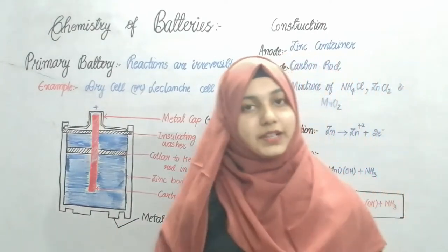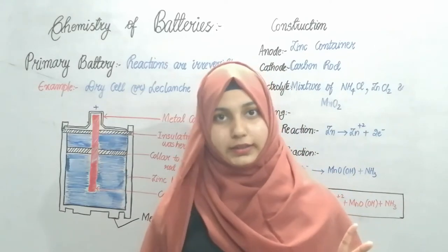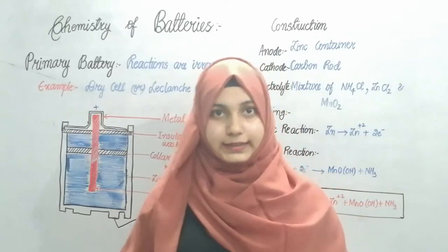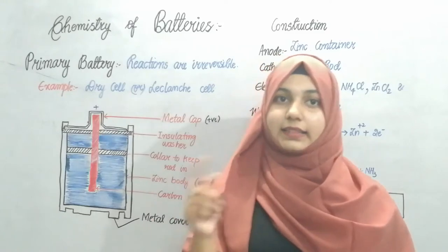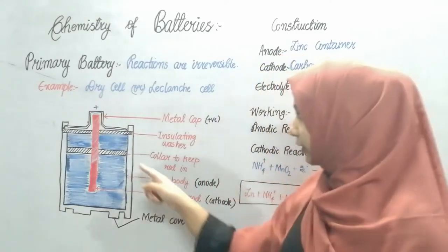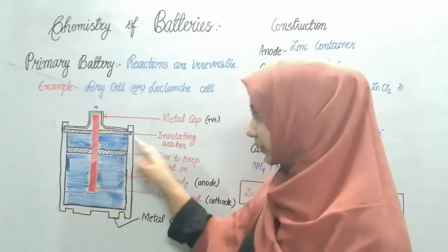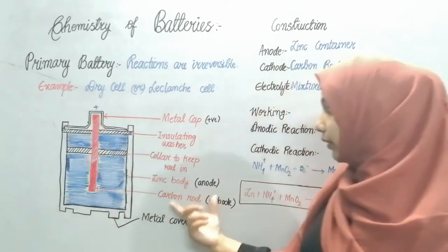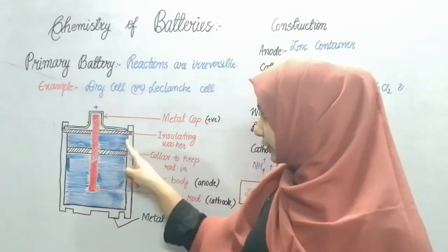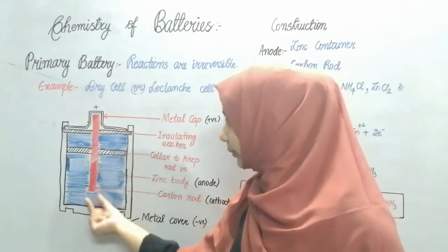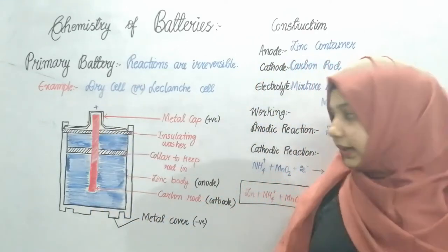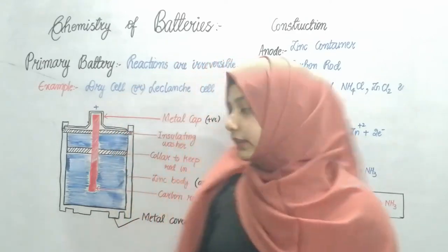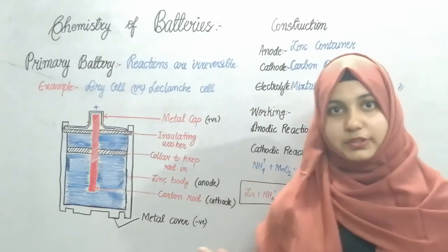For a battery to be constructed, we need three major components: anode, cathode, and electrolyte. In a zinc-carbon battery, zinc acts as the anode and carbon acts as the cathode. Inside the zinc container, there is an electrolyte in which a carbon rod — the cathode — is fixed. The electrolyte is a mixture of zinc chloride, manganese dioxide, and ammonium chloride.